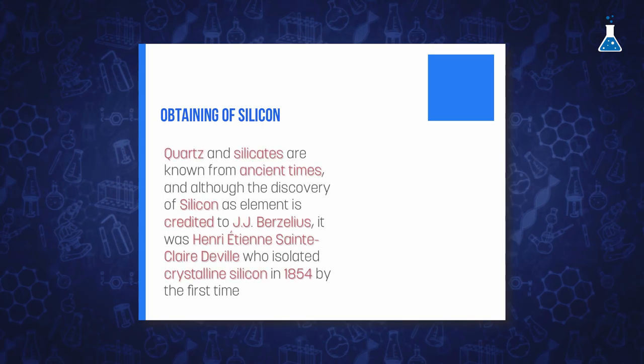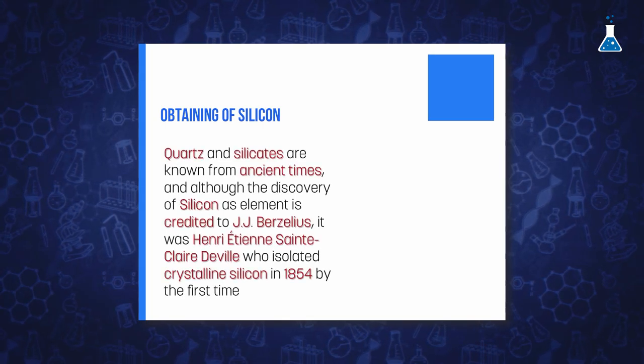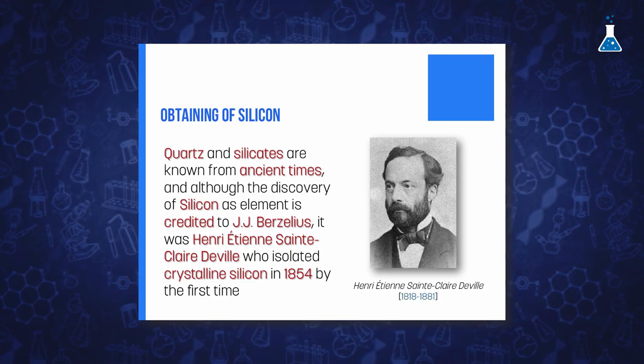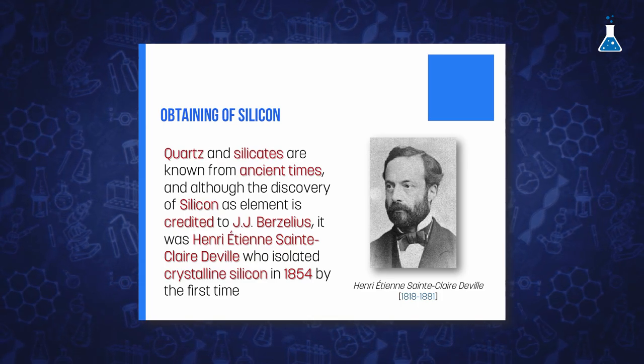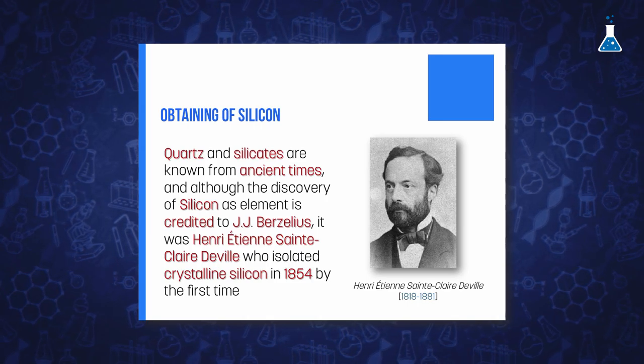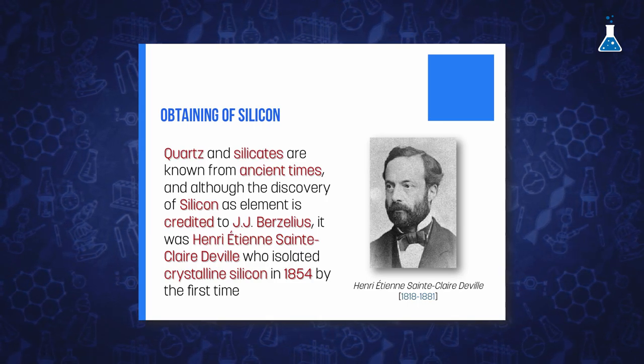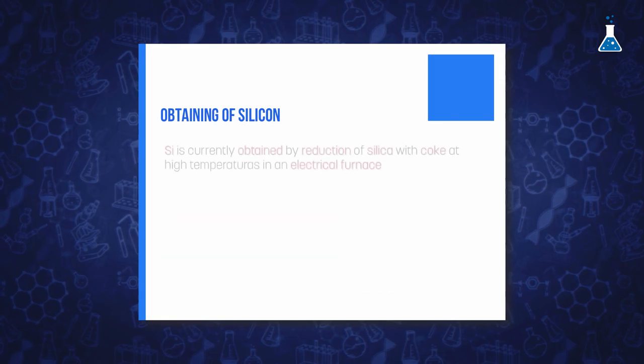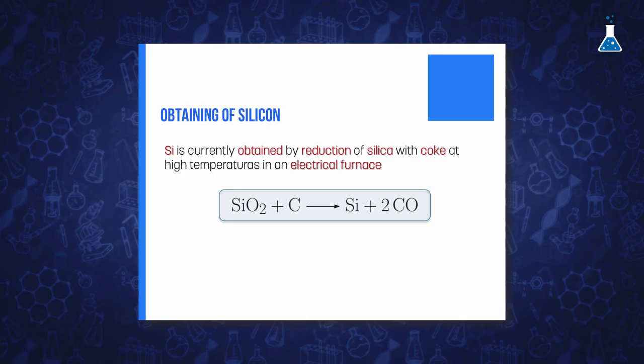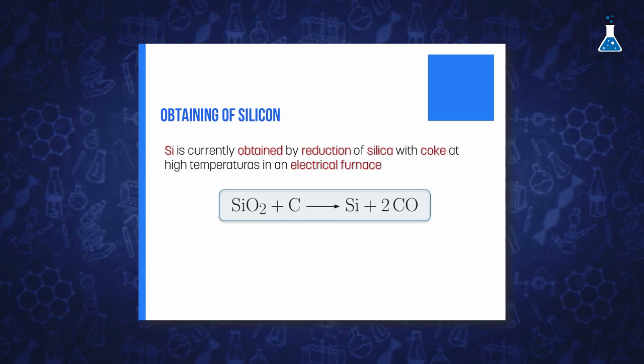However, after many scientists' inputs during the 18th century, it was Henri Etienne Sainte-Claire Deville, who prepared in 1854 silicon by electrolysis, warning by then that this element was not a real metal. Silicon is now usually obtained by heating silicon dioxide with coke at high temperature in an electrical furnace.